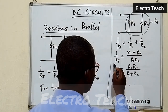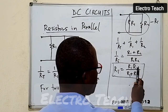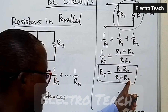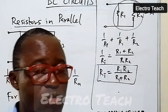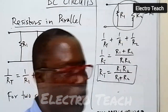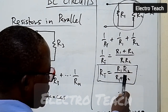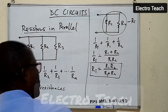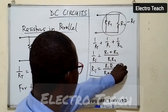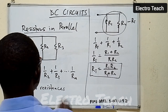So for two resistances connected in parallel, the equivalent resistance is the product of the two resistances divided by their sum — product over sum. This is applicable for only two resistances. When we have three, four, or more, this shortcut is not applicable; we need to use the general formula. We are going to look at examples: first two resistors in parallel, then three resistors in parallel.